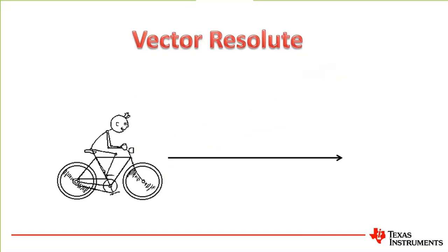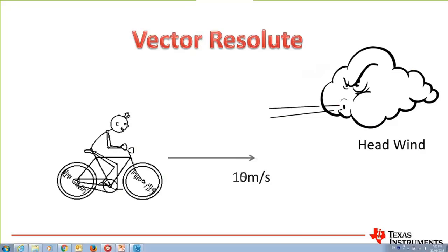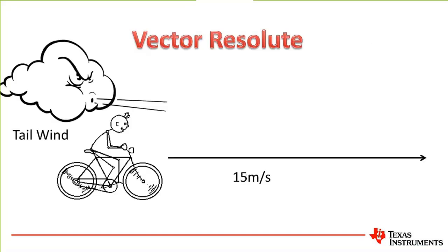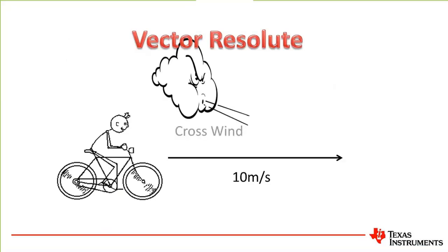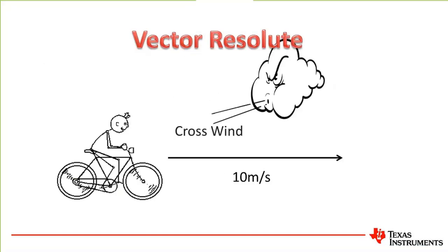What if the wind comes from behind — a tailwind? A five metres per second tailwind will add to the speed. And what if there's a crosswind? Whether it speeds the cyclist up depends on the component acting in the direction of the cyclist. The dot product might be negative if it's partly a headwind, but only slows him down by a little bit, not the full strength of the wind. This is essentially what vector resolute is all about.